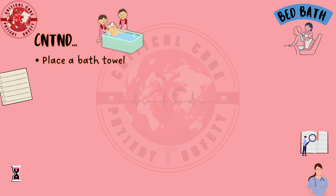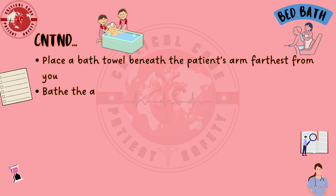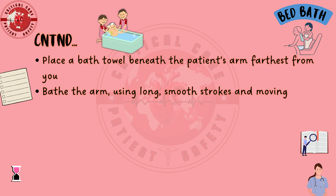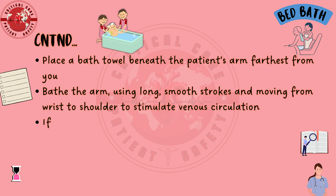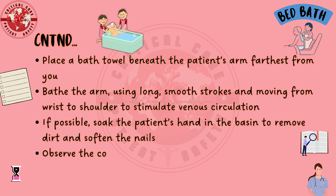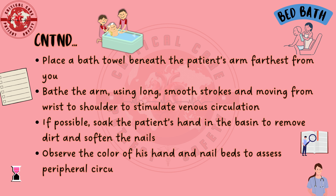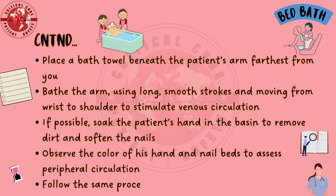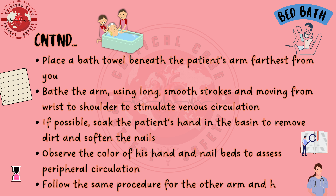Place a bath towel beneath the patient's arm farthest from you. Bathe the arm using long, smooth strokes, moving from wrist to shoulder to stimulate venous circulation. If possible, soak the patient's hand in the basin to remove dirt and soften the nails. Observe the color of his hand and nail beds to assess peripheral circulation. Follow the same procedure for the other arm and hand.